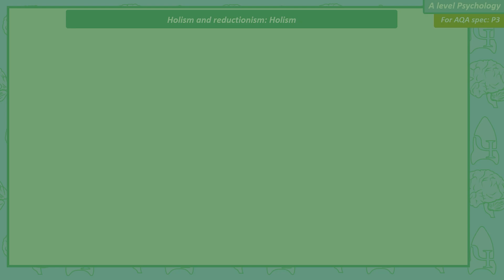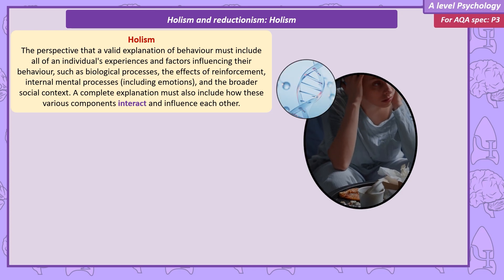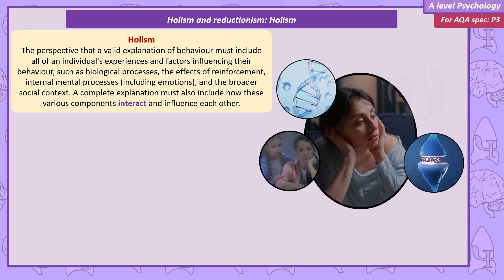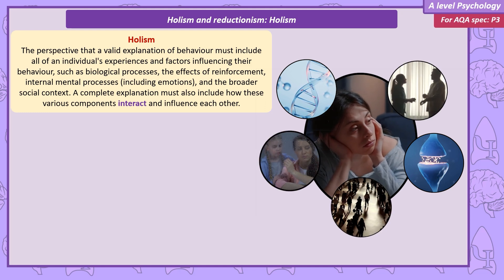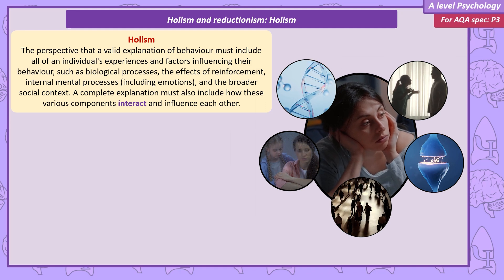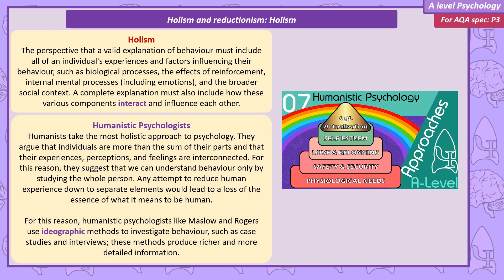Holism — the counter to reductionism — argues a truly valid explanation of human behaviour needs to include the whole person. So, this includes biological processes, the role of reinforcement, internal mental processes including emotions, and even the broader social context behind the behaviour. To be fully holistic, an explanation of any behaviour would include all of these factors and how these components interact with each other. The humanists are the best example of the holistic approach in psychology. They argue it's only by studying the whole person that we can really understand the human experience.